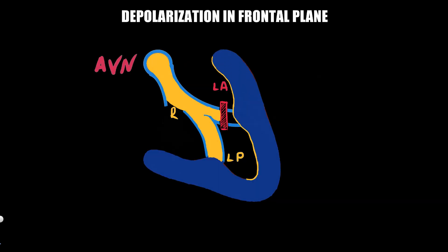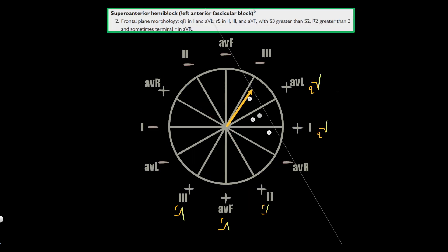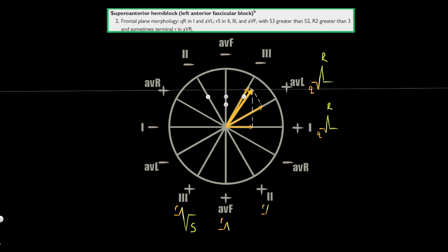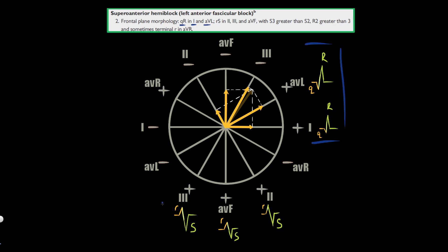The last depolarization stage is oriented even more leftward and upward. The depolarization vector projects to the positive part of AVL, causing a high R-wave there, and to the negative part of the third standard lead, causing a deep S-wave. A similar picture is observed in the third standard lead and AVF, but with lower amplitudes of R and S waves respectively. The same vector projects to the negative part of the second standard lead, producing an S-wave there. This is how the ECG criteria in the frontal plane are formed.